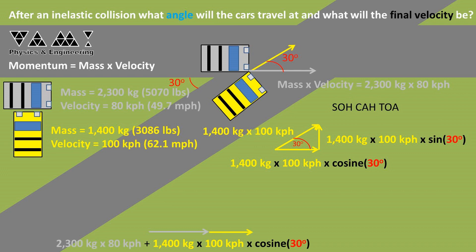Now we can make a new triangle with a leg that is the gray car's momentum plus the momentum of the yellow car in the x direction, the cosine portion from the previous step. The other leg of this triangle will be the y-leg of the yellow car's momentum vector, the sine portion from the previous step.